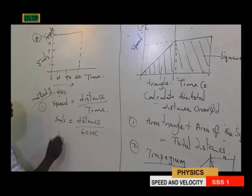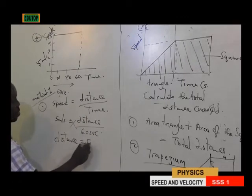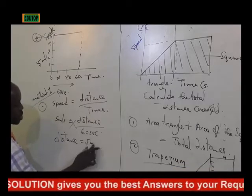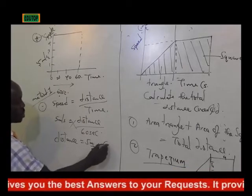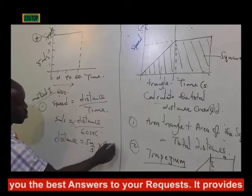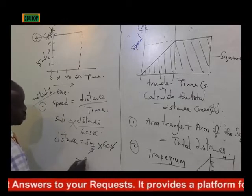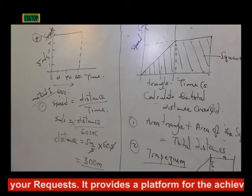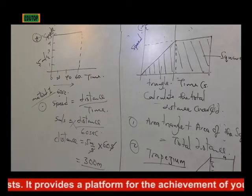By the time you cross-multiply, your distance comes out as 5 meters per second times 60 seconds. Seconds cancel out with seconds, so 5 times 60 gives you 300 meters. So in this case, the total distance covered is 300 meters.